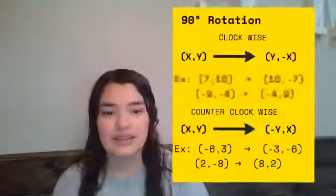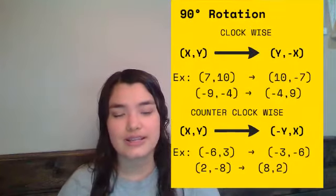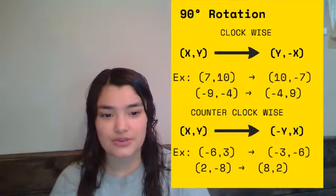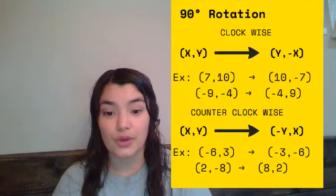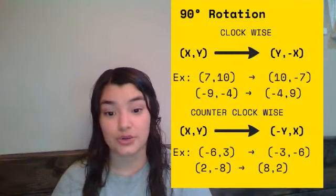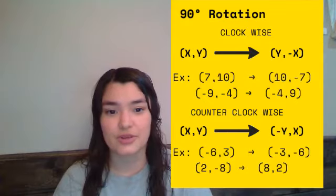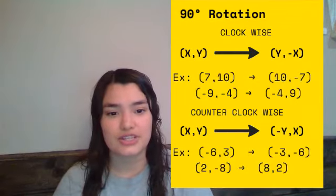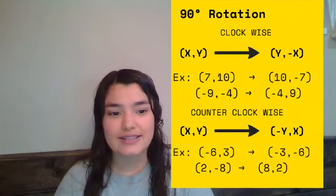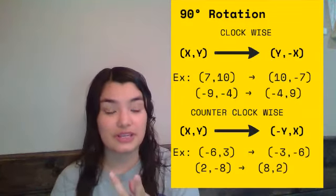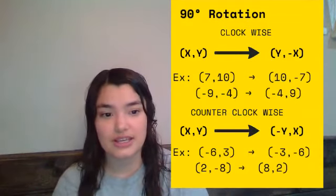To begin with, a 90 degree rotation clockwise. These are the rules that you need to memorize in order to know what happens to your coordinate when such a degree rotation happens. When a 90 degree clockwise rotation happens, your x and y are going to flip and your x is going to become its opposite.